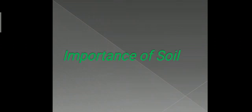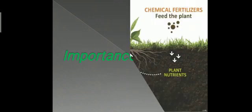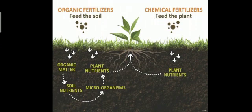Soil is important. Plants use the nutrients in soil to grow and make food. All plants directly or indirectly — soil can provide the nutrients which plants use. Animals also depend on plants for food, so soil is very important for life.